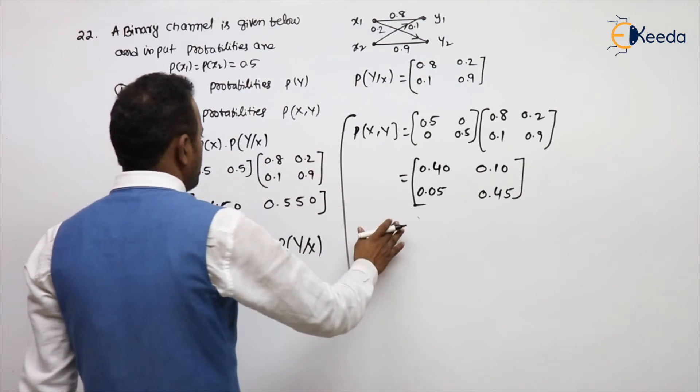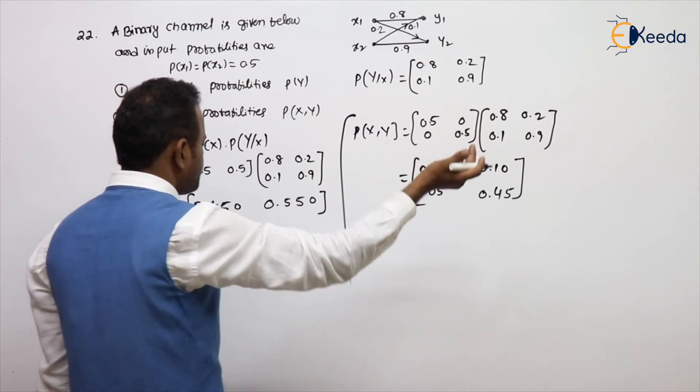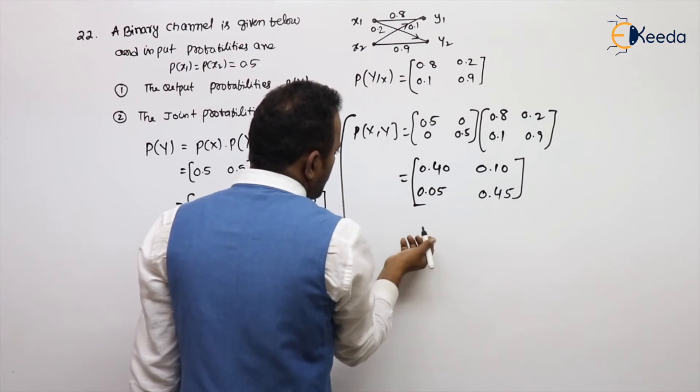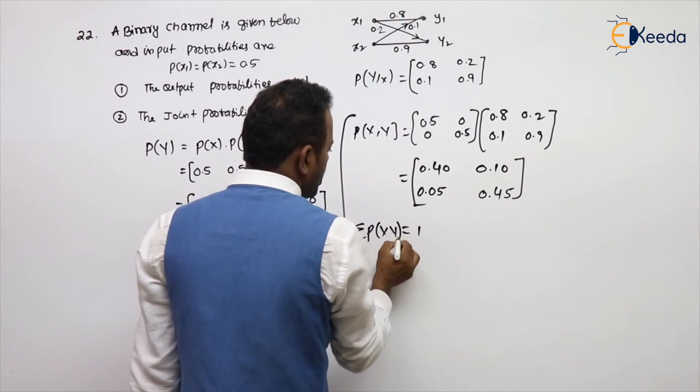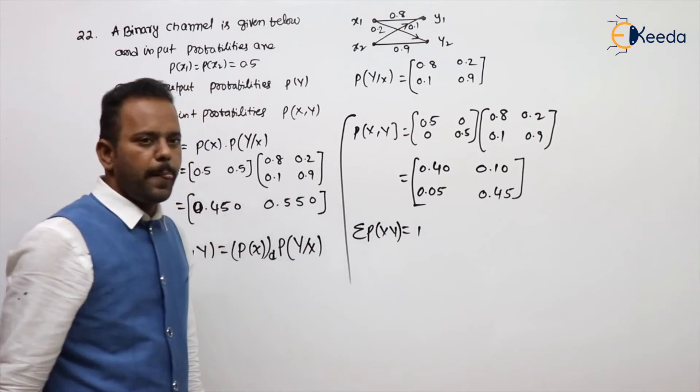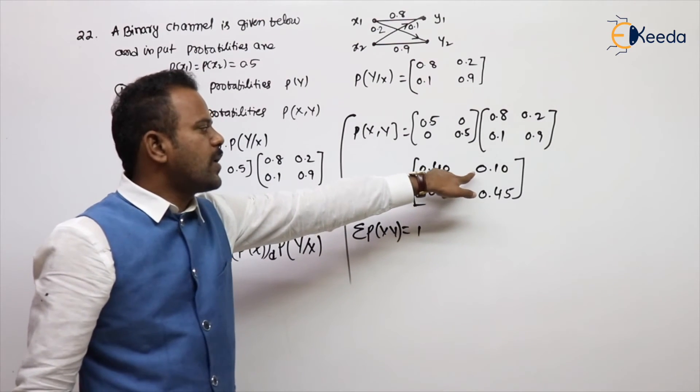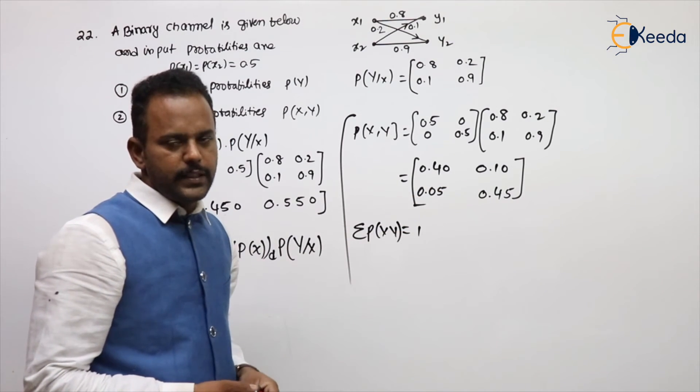Now, in a joint probability matrix, you can understand that all probabilities if you are adding, all probability values will be definitely equal to 1. So summation joint probability value should be 1. What is this? P(x1,y1), P(x1,y2), P(x2,y1), P(x2,y2). These are the things.